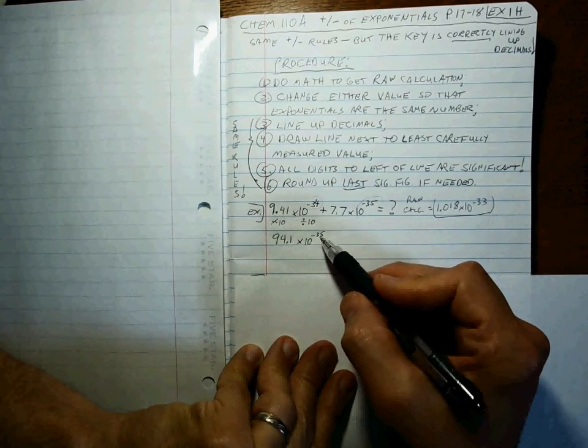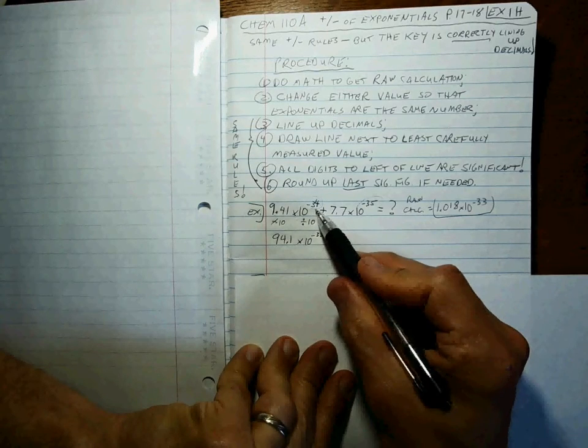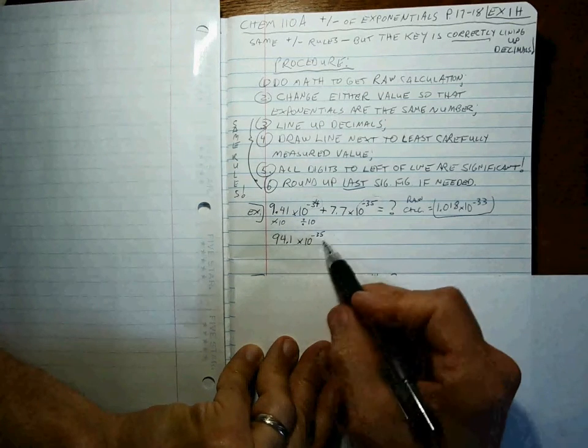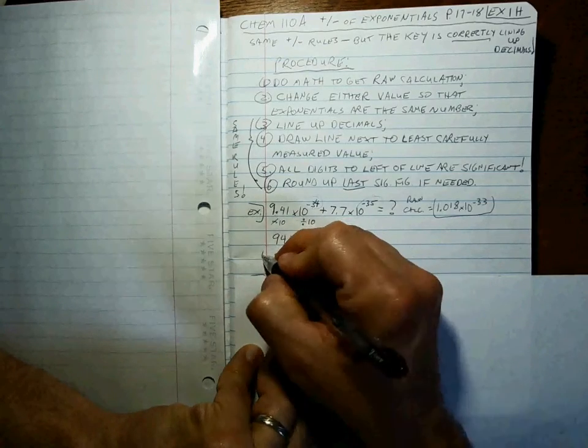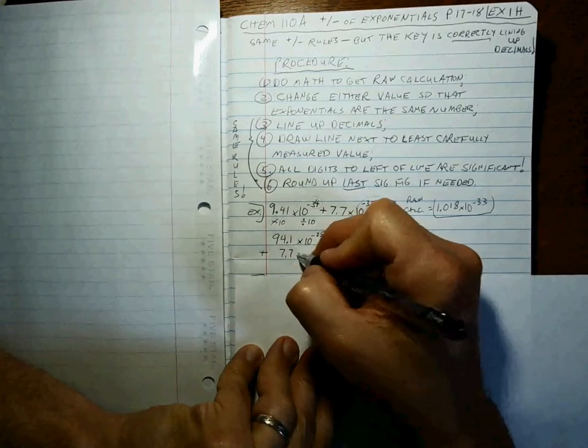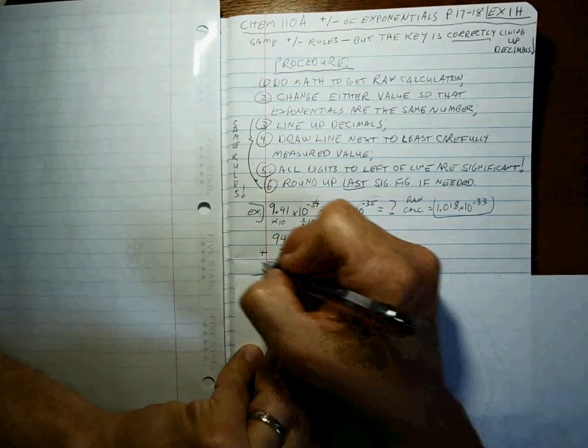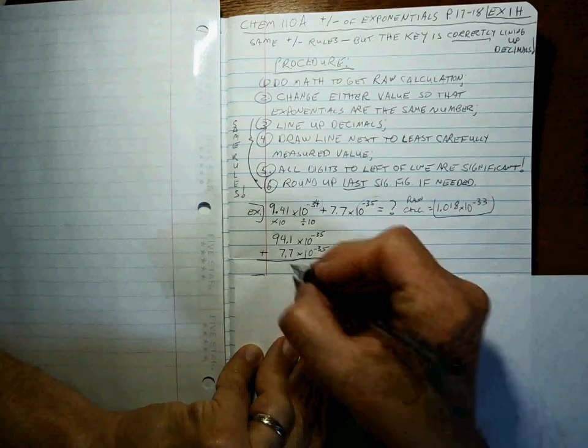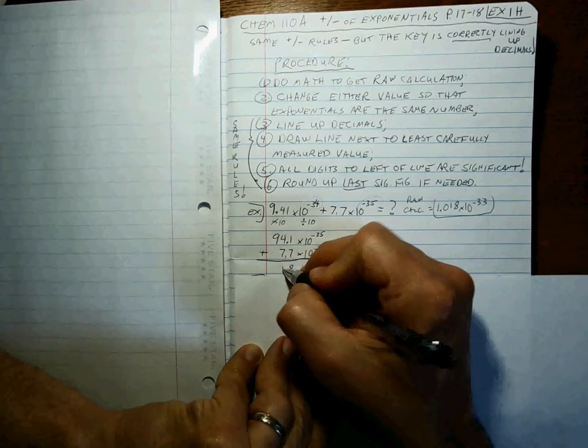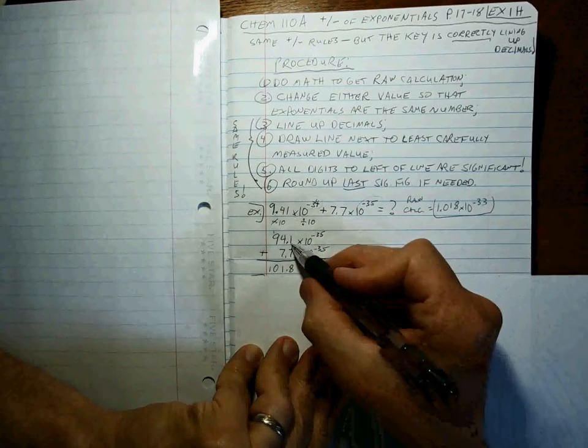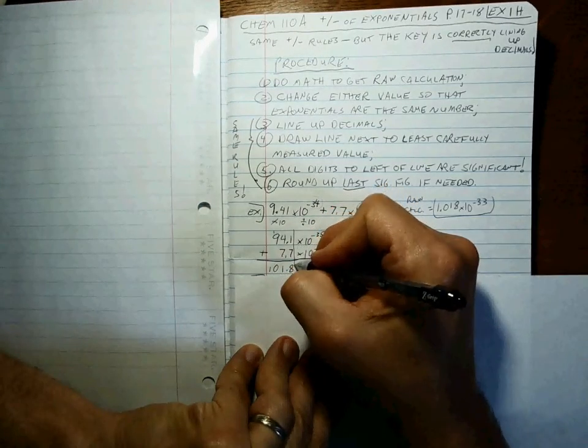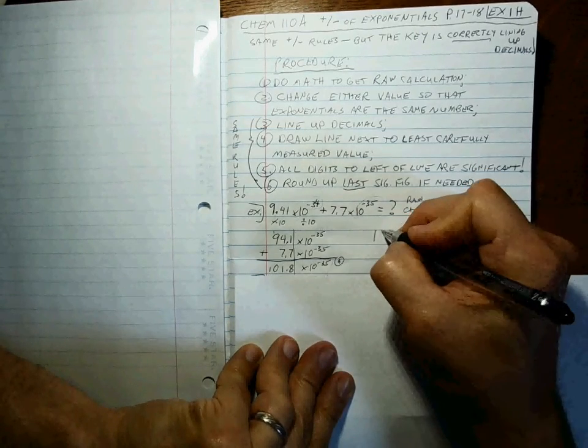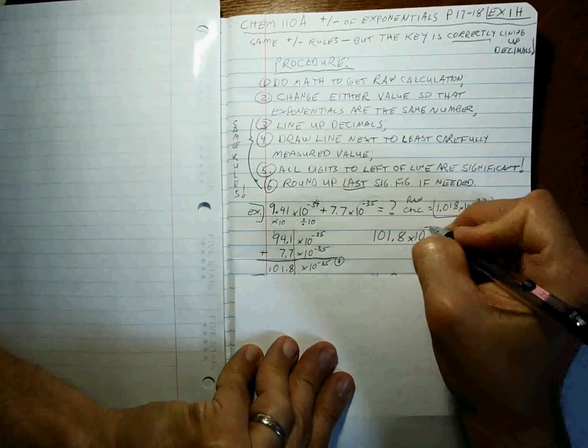If you're not sure about that, type this number into your calculator, hit equals, and see if you get that one. If they match up, you've done that right. Once you've set that number to 10 to the minus 35 with the same value, now we can line up the decimal places. 7.7 times 10 to the minus 35. The times 10 to the minus 35 falls to the bottom. And now we just do our math: 8, 1, 1, 0. And where do we draw the line here? Well, this number is known to the tenths place, this number is known to the tenths place. All of these numbers are significant. This is a number with 4 sig figs. The final answer is 101.8 times 10 to the minus 35.